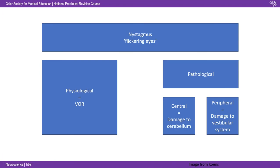One thing mentioned in your syllabus that can be confusing is nystagmus, which I've defined as flickering eyes. There are basically two types: physiological and pathological. Physiological is the vestibulo-ocular reflex — you moving your head and your eyes flickering back onto target — absolutely normal. You've also got pathological nystagmus, which you can subcategorise into central and peripheral. Central nystagmus — think damage to the cerebellum; peripheral nystagmus — think damage to the vestibular system. A pathological nystagmus can be indicative of a problem in the vestibular system.